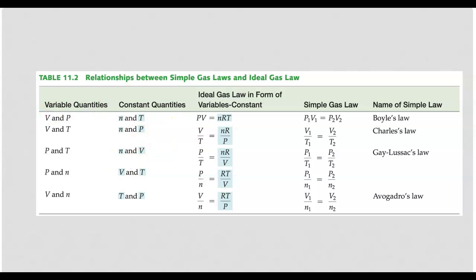So volume is directly related to temperature. If all of the other variables are constant, then we get Charles law. And so with these we can kind of see how that works.